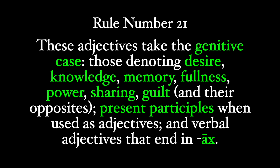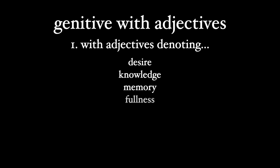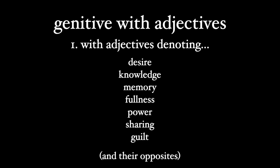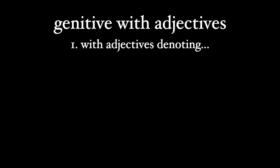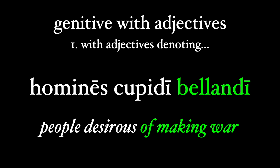Let's start with the adjectives denoting desire, knowledge, memory, fullness, power, sharing, guilt, and their opposites. Caesar describes the Helvetians as being a people desirous of making war: 'homines cupidae' — and 'cupidae' is our adjective of desire, and it takes the genitive 'bellandi.'